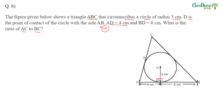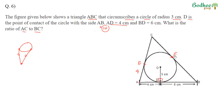From point A, both tangents AE and AD equal 4. From point B, tangents BF and BD both equal 6. From point C, both tangents CE and CF equal X. Using the incircle area formula: Area = r × s (where s is the semi-perimeter). The semi-perimeter s = (X + 4 + X + 6 + 10)/2 = X + 10. We also apply Heron's formula for the area.